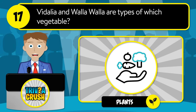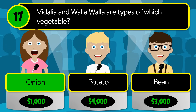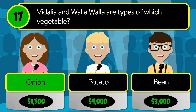Question number seventeen: Vidalia and Walla Walla are types of which vegetable? Is it onion, potato, or bean? The correct answer is onion.